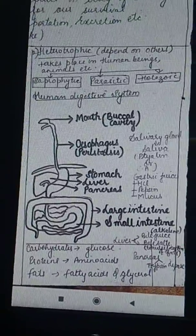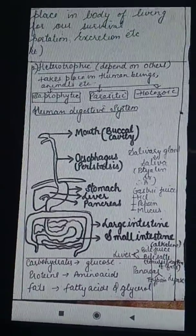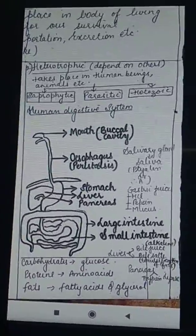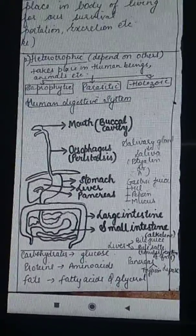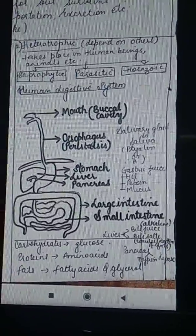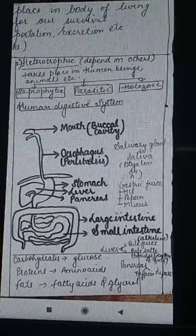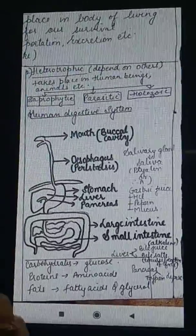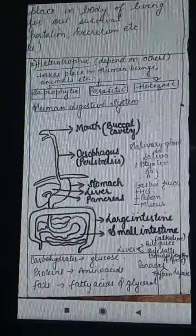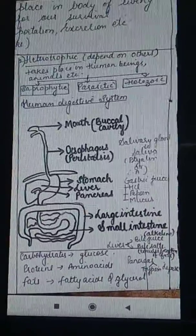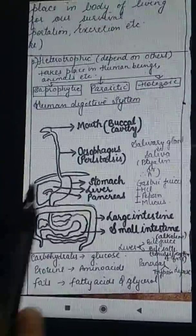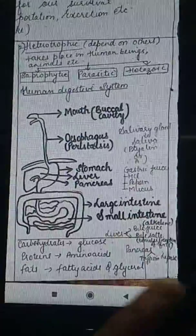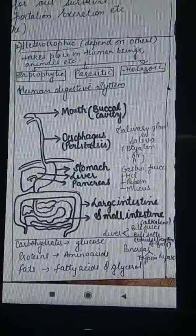The third feature of teeth is that they are thecodont, meaning the teeth are fixed in sockets which are present in the mouth — those sockets are called jaws. So the three features are: diphyodont (temporary and permanent teeth), heterodont (four types: incisors, canines, premolars, molars), and thecodont (fixed in jaw sockets).